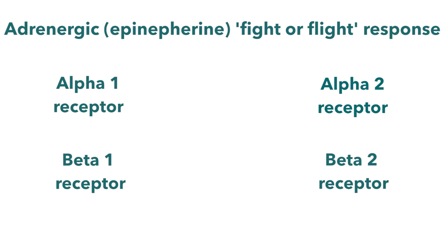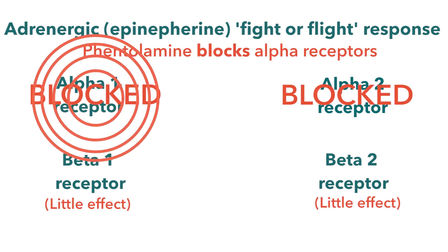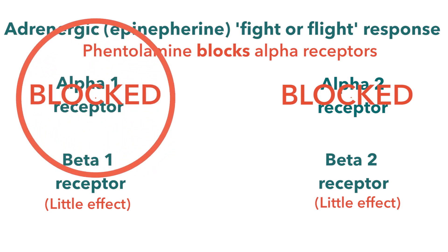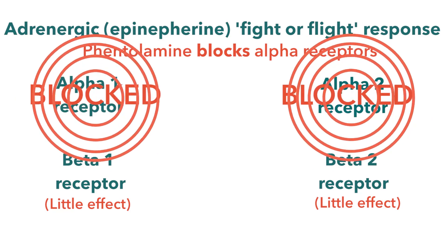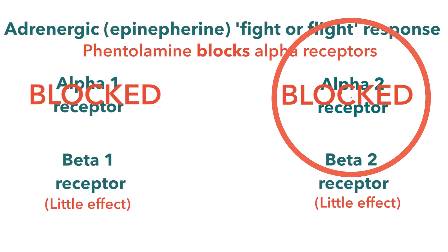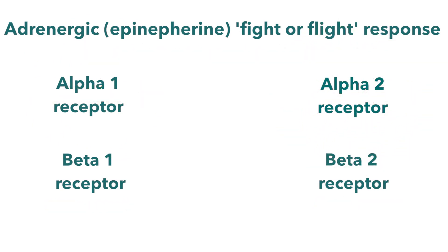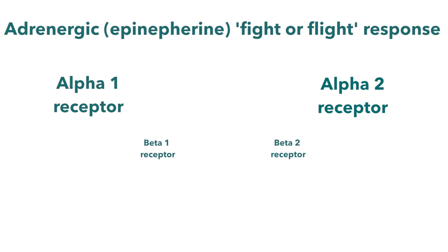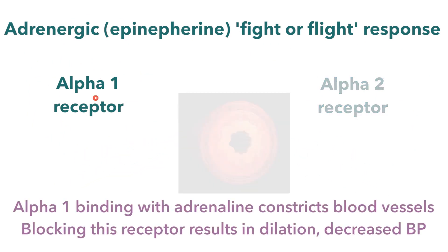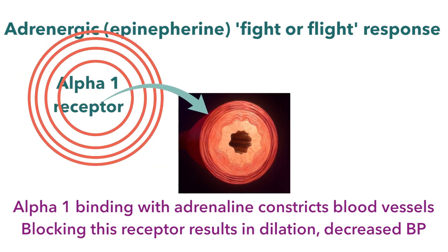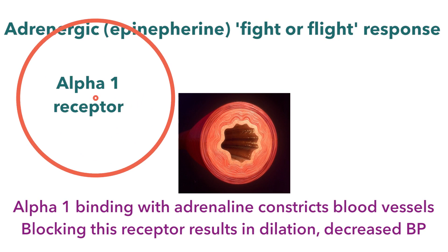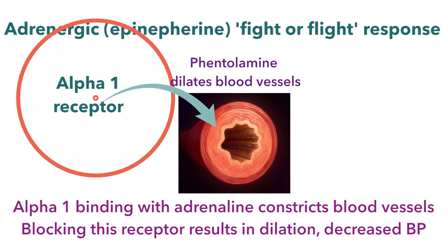Phentolamine is a non-selective alpha blocker, meaning it binds to the alpha-1 receptor and it binds to the alpha-2 receptor. To truly understand the actions and side effects of phentolamine, we need to know what the alpha-1 and alpha-2 adrenergic receptors do. Phentolamine binding to the alpha-1 receptor causes a profound vasodilation, blocking the constrictive actions of the adrenaline.